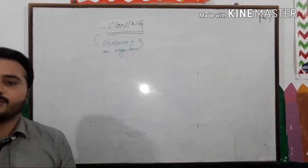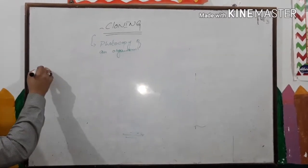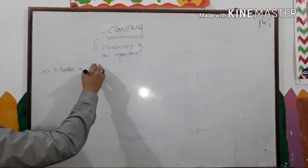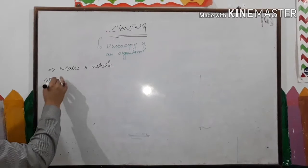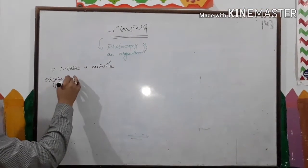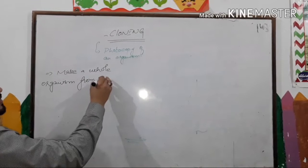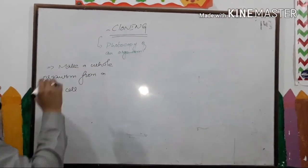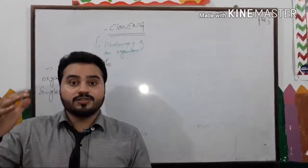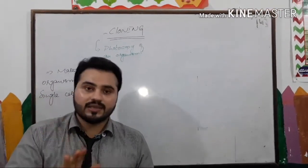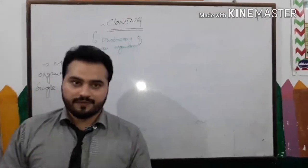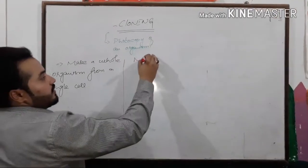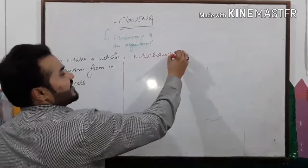Make a photocopy of an organism — or another definition is: make a whole organism from a single cell. This is another definition of cloning. Now what is the mechanism of cloning?